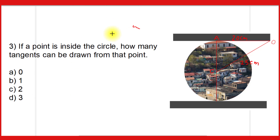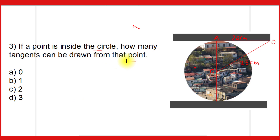The third question: if a point is inside the circle, how many tangents can be drawn from that point? If the point is drawn inside the circle, we cannot construct a tangent — tangents can only be constructed from a point outside the circle. Therefore, 0 tangents can be drawn from a point inside the circle, so option A is the correct answer.